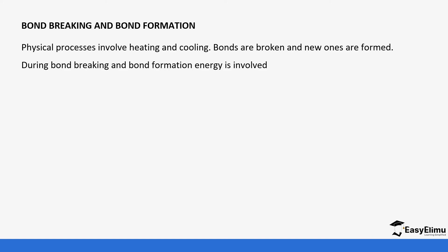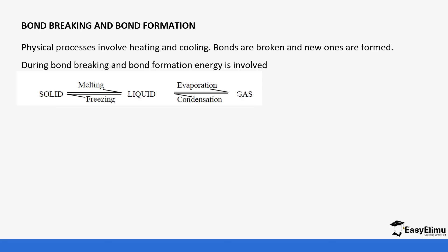Physical processes usually involve heating and cooling, so bonds are broken and then new ones are formed. During bond breaking and bond formation, energy is involved. An example of heating and cooling processes: when we move from solid to liquid we are heating, liquid to evaporation we continue heating, gas to liquid we condense, liquid to solid we continue condensing.